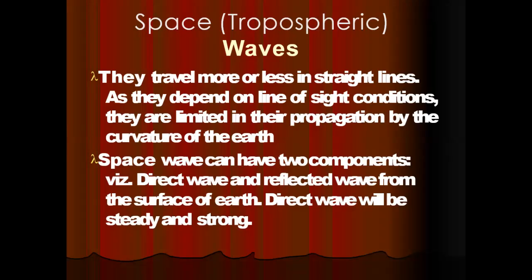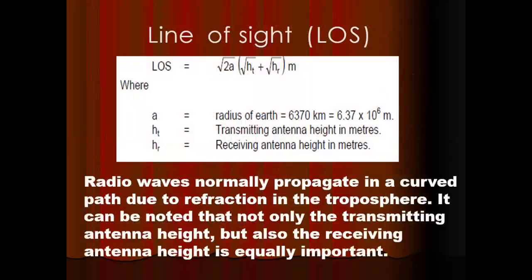Space waves can have two components: first, direct wave; and second, reflected wave from the surface of the Earth. The direct wave is steady and strong. Line of sight LOS = √(2a·Ht) + √(Hr) km, where a = radius of the Earth = 6,370 km = 6.378 × 10⁶ meters, Ht = transmitter antenna height in meters, and Hr = receiving antenna height in meters.